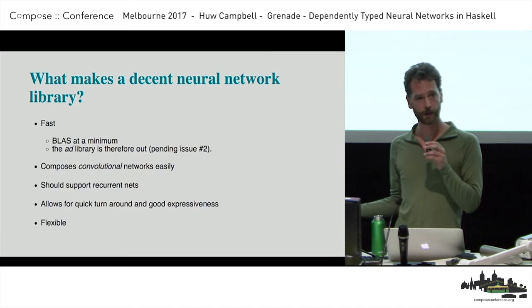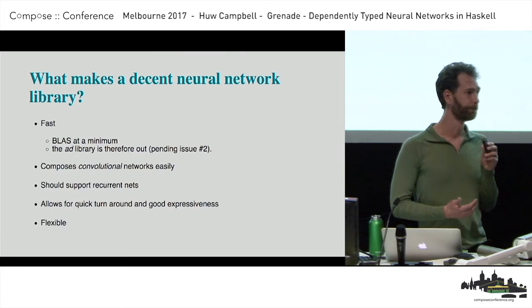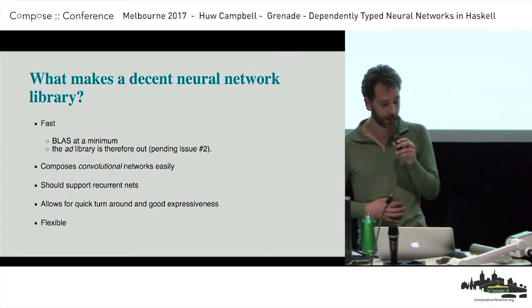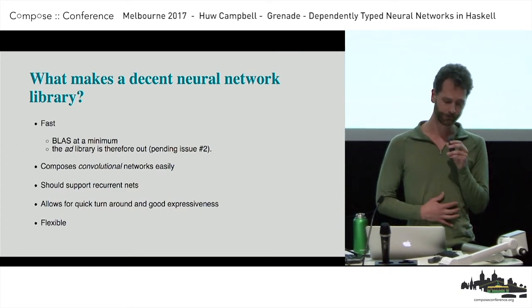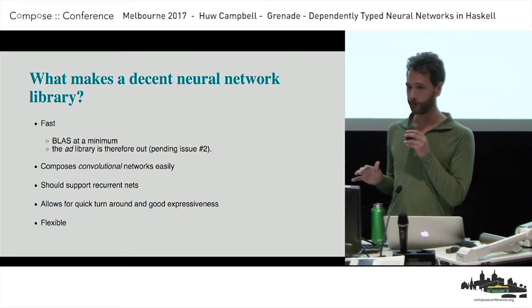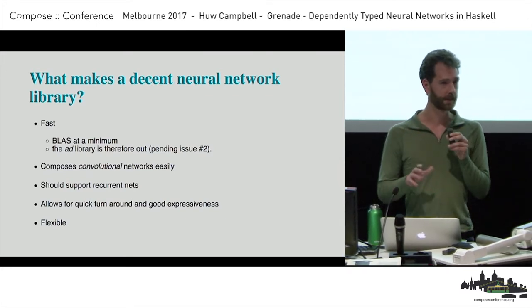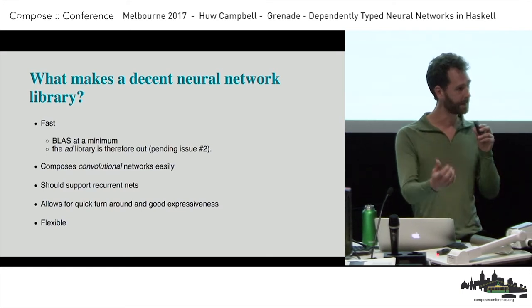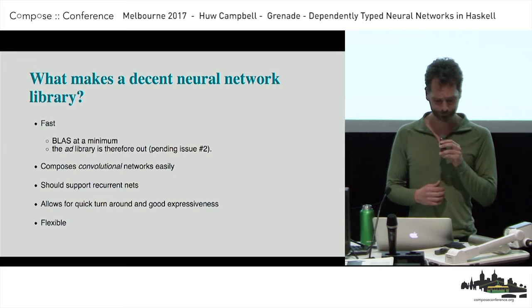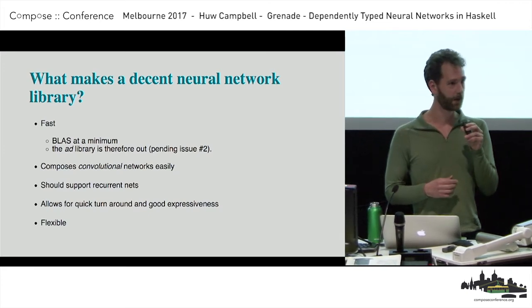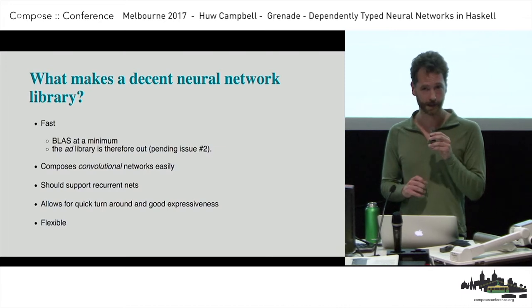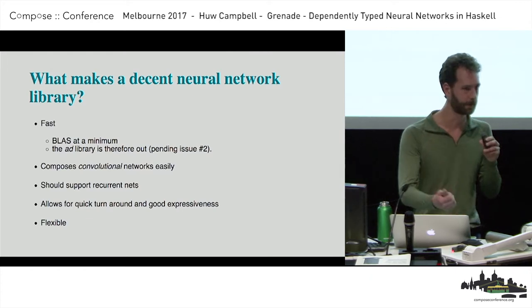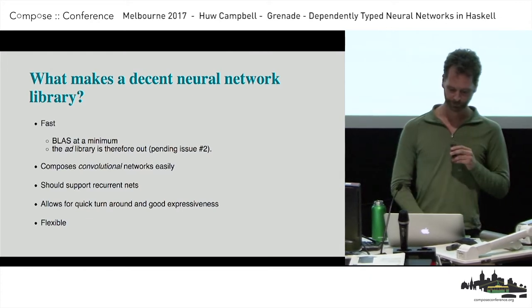What makes a decent neural network library? It has to be pretty quick — fast. These networks can get quite large and it can become time-consuming to train them. At a very minimum you want BLAS support, which unfortunately in the Haskell world means the AD library won't cut it. You need to be able to compose your convolutional layers easily, it's really nice to have recurrent neural networks, and you need to be flexible with quick turnaround.